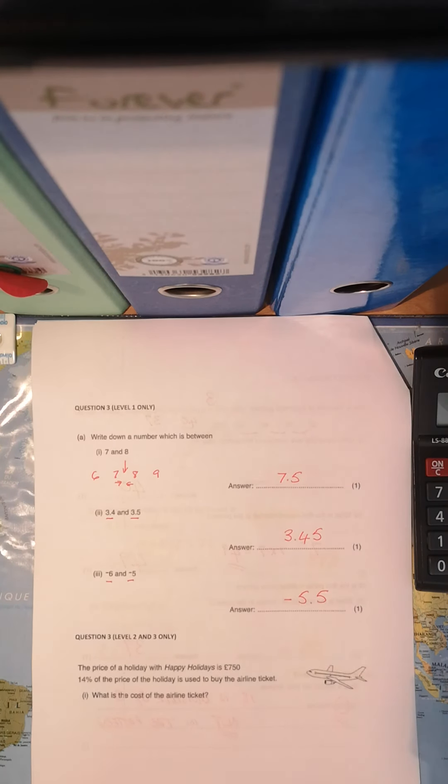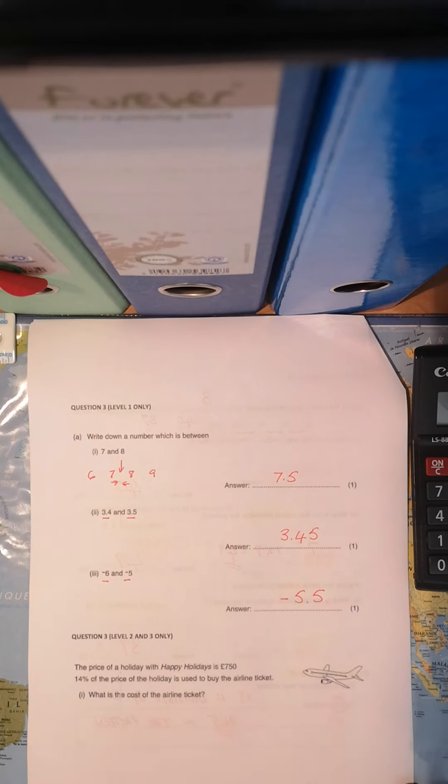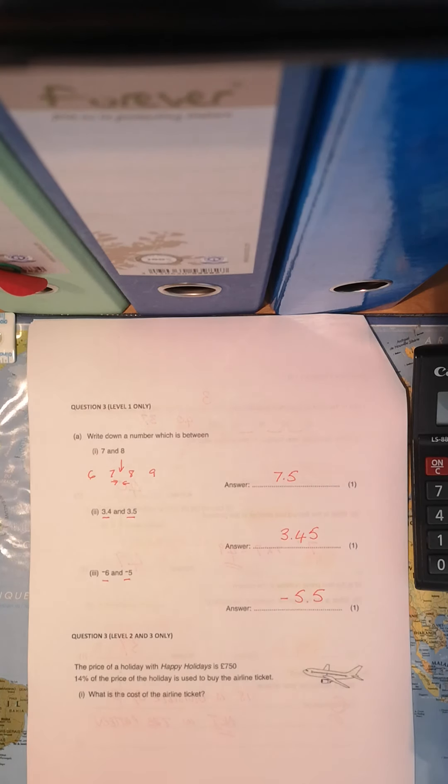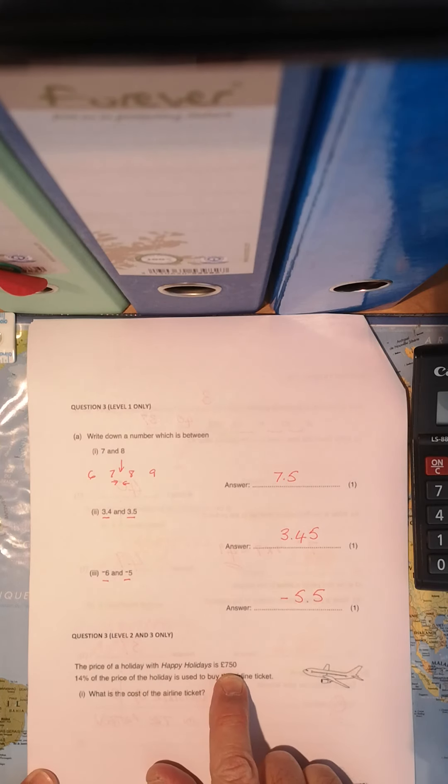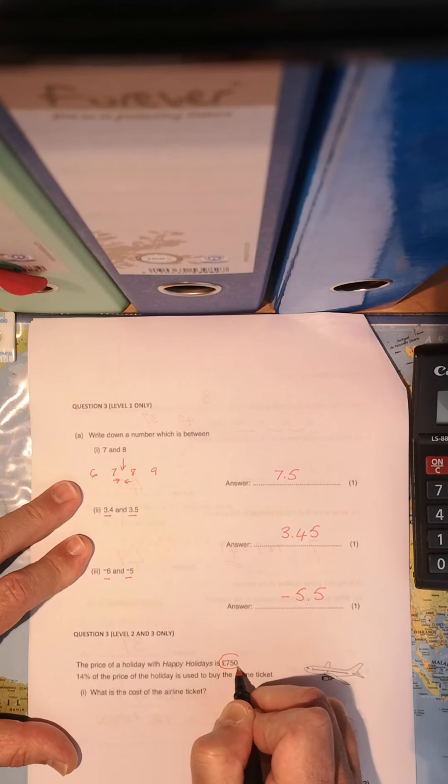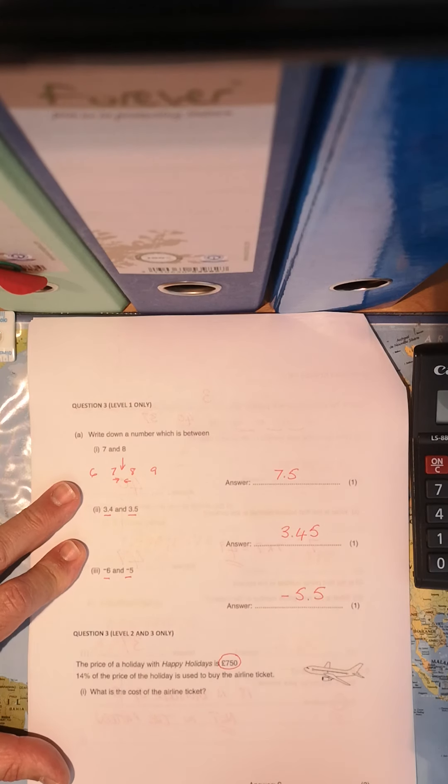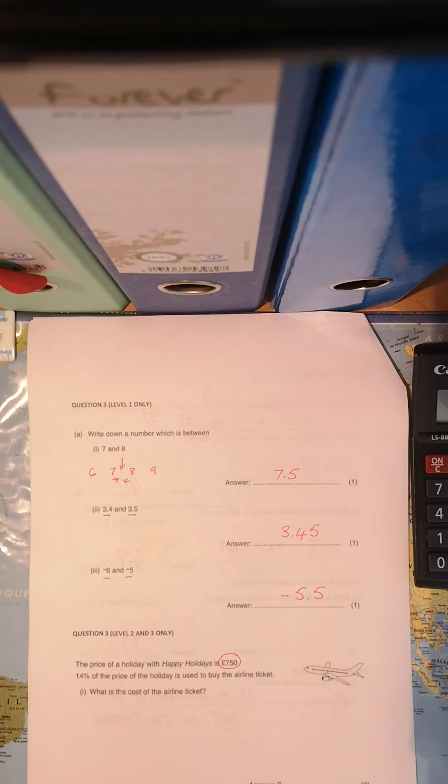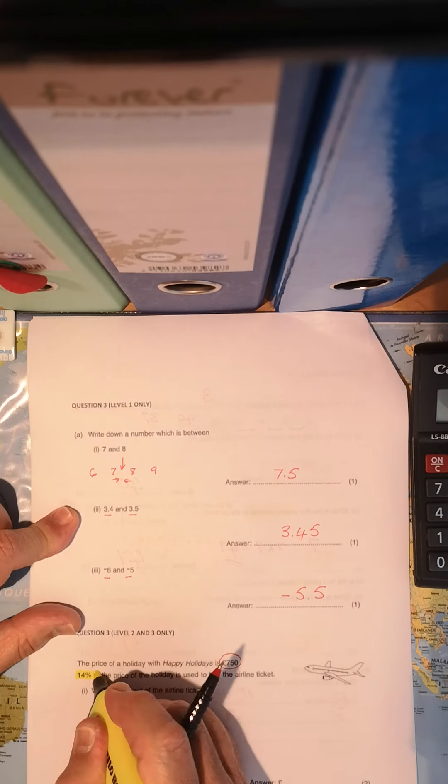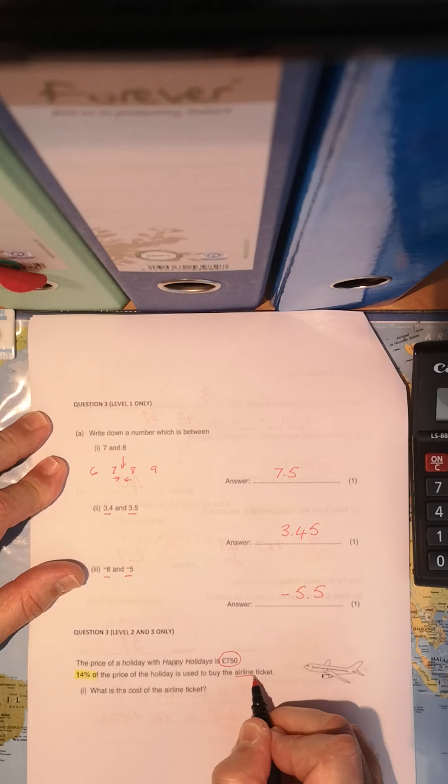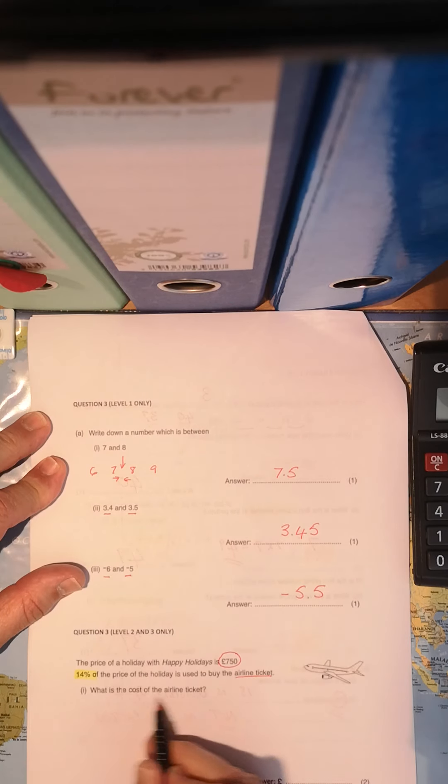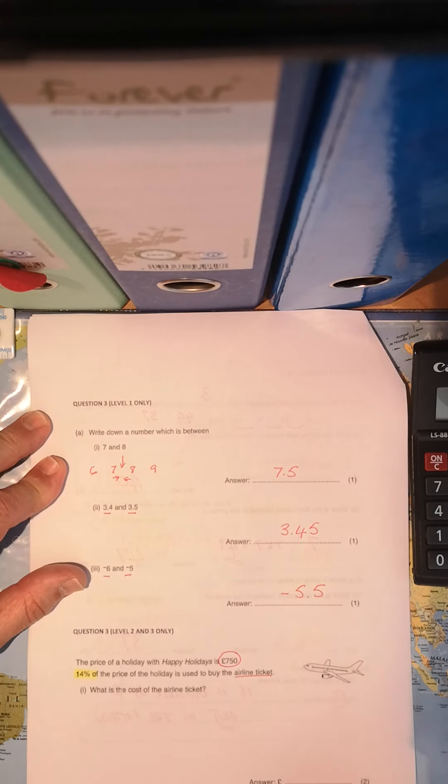Now we come to a tricky question. Or not. Let's read it properly. The price of a holiday with Happy Holidays is 750 pounds. So that's the price of the entire holiday, 750 pounds. 14% of this price was for the airline ticket. What is the cost of the airline ticket in pounds?